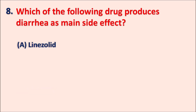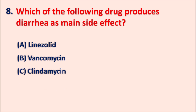Question eight: which of the following drugs produces diarrhea as a main side effect? Options are: A) linezolid, B) vancomycin, C) clindamycin, D) quinupristin. Many drugs produce gastrointestinal disorders, but some antibiotics can increase pathological organisms which may produce diarrhea.